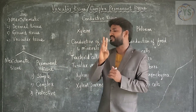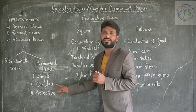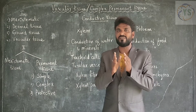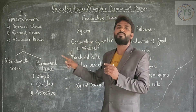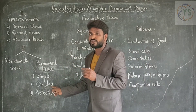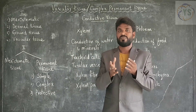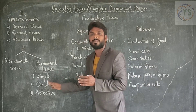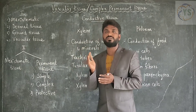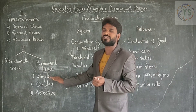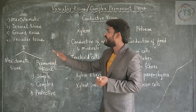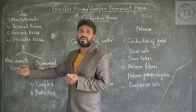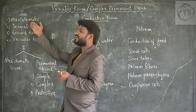Permanent tissue is divided into three kinds: simple permanent tissue, complex permanent tissue, and protective tissue. Simple permanent tissue has the same kind of cells. Complex permanent tissue has different kinds of cells. Protective tissue protects the internal parts of the plant body. Simple permanent tissue is ground tissue, complex permanent tissue is vascular tissue, and protective tissue is dermal tissue. Meristematic tissue is present in both classification methods, so mainly four kinds of tissues are present in plants.